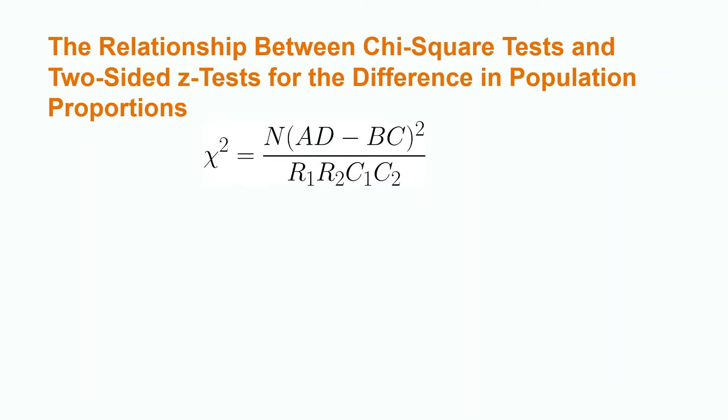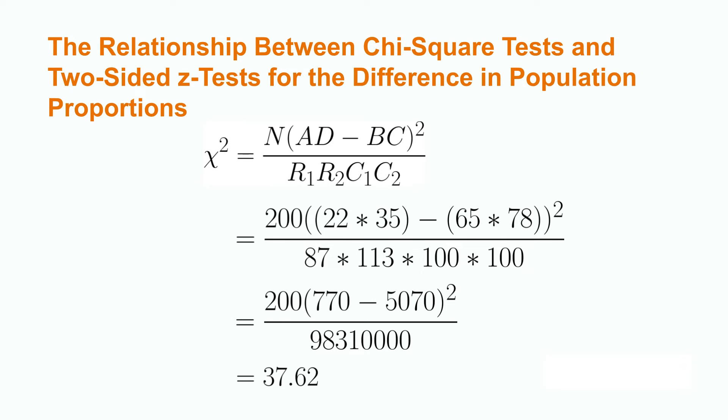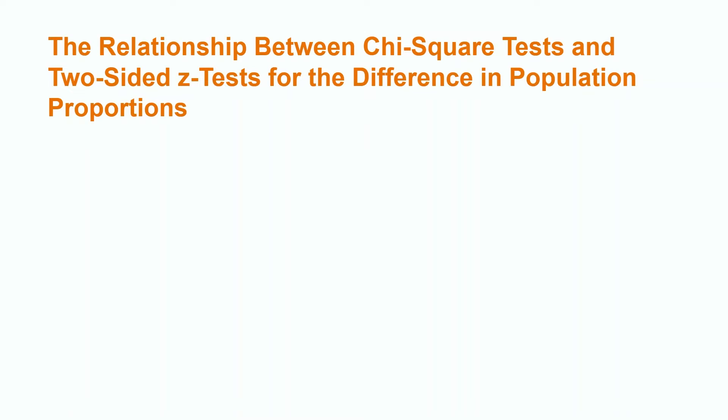Using our formula for calculating a chi-square test statistic for a two-by-two table, we obtain a chi-square test statistic of 37.62. Using technology to calculate the p-value, we obtain a p-value of 0.0000, meaning the number of American women with a bachelor's degree in 2020 is different from 1950.